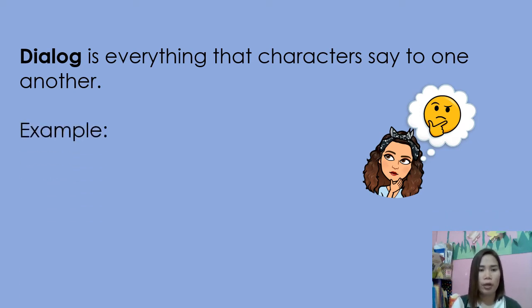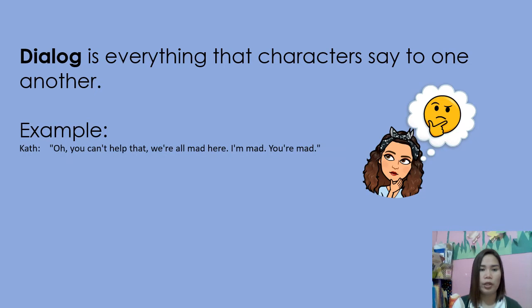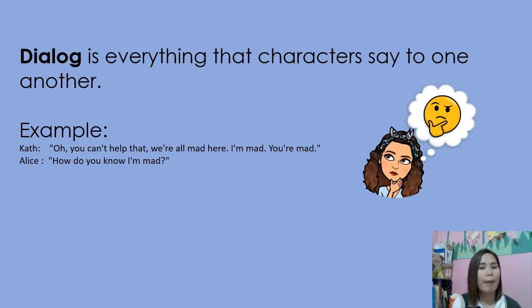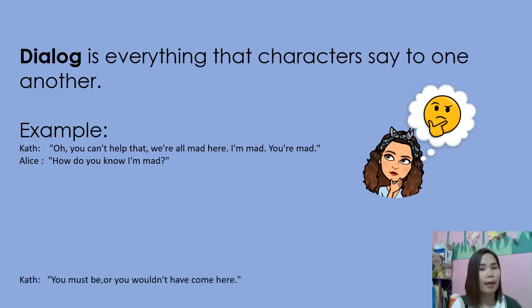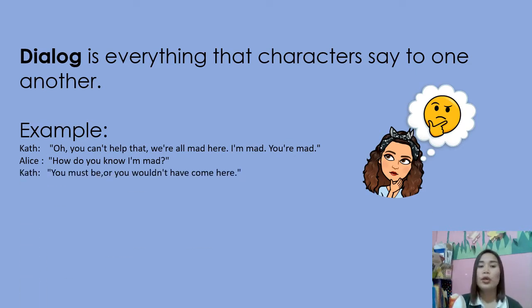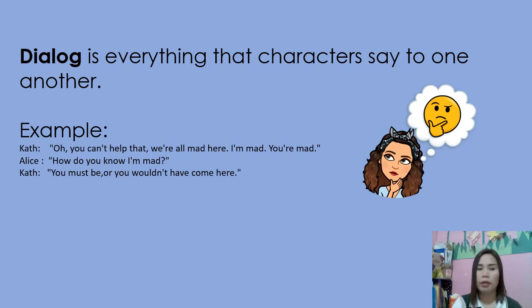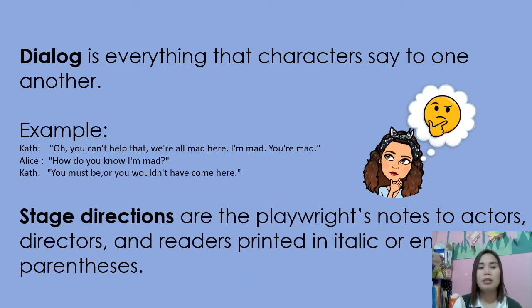For example, here is the dialogue of Kat and Alice. Kat says: 'Oh, you can't help that? We're all mad here. I'm mad, you're mad.' And Alice replies: 'How do you know that I'm mad?' Kat says: 'You must be, or you wouldn't have come here.' That is an example of dialogue — the exchange of spoken words between two or more characters.